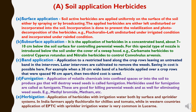The fifth method is herbigation — the application of herbicides with irrigation water, both by surface and sprinkler systems. In India, farmers apply fluchloraline for chilies and tomato, while in western countries, application of EPTC with sprinkler irrigation water is very common in lucerne crop.